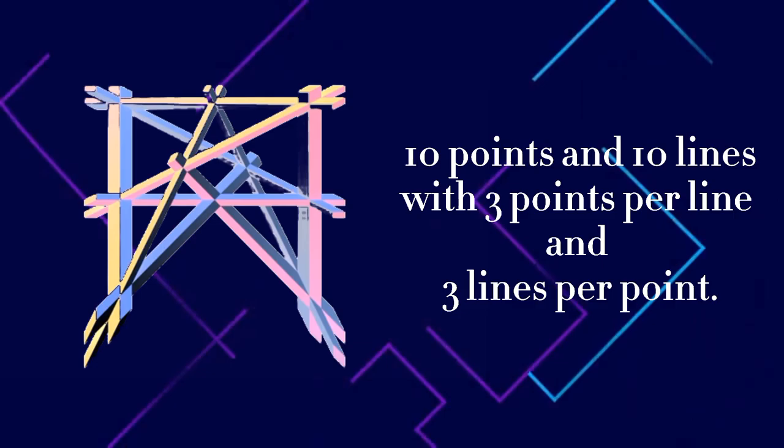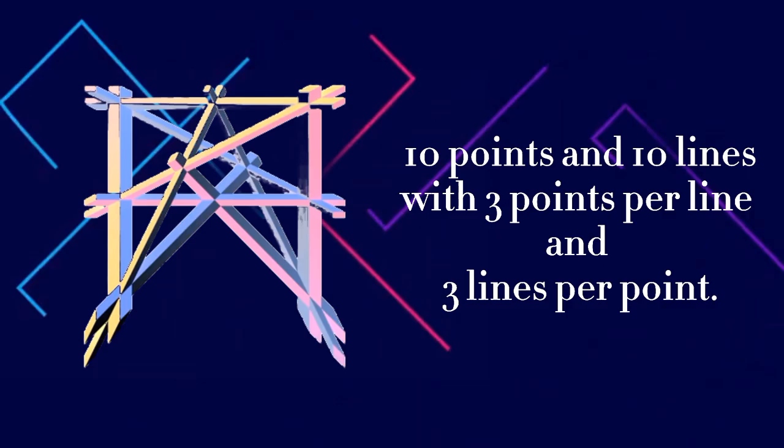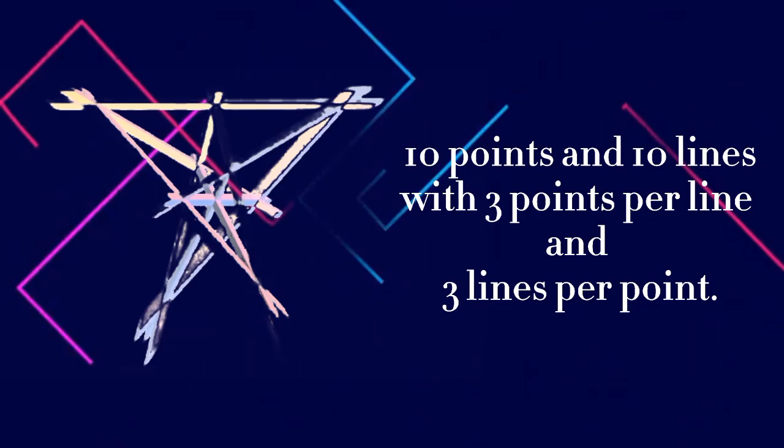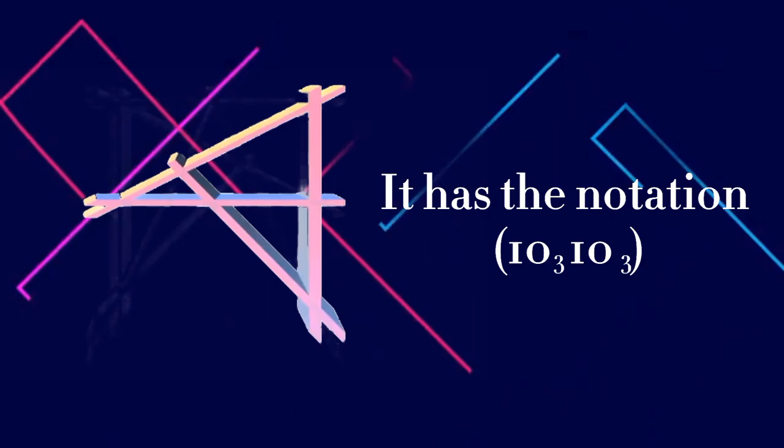It is a configuration of ten points and ten lines with three points per line and three lines per point, and is also closely related to Desargues' theorem, which proves the existence of the configuration. The Desargues configuration has the notation